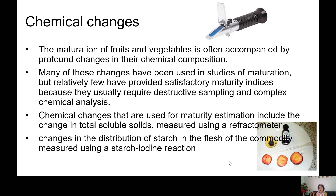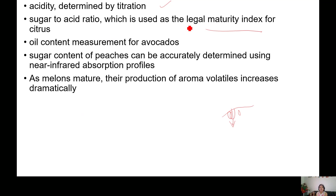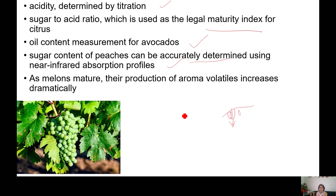Changes in distribution of starch in the flesh can also indicate maturity. Acidity changes — as in the example of grapes, citrus — and sugar-to-acid ratio changes in pomegranate can be determined simply by titration. Companies like Sula Wines have R&D labs right at the grape farms where grapes are checked for acidity and sugar-to-acid ratio, which can also be used as a legal maturity index for citrus. Oil content in avocado and sugar content of peaches can be very accurately determined using NIR. As melons mature, the production of aroma volatiles increases drastically.